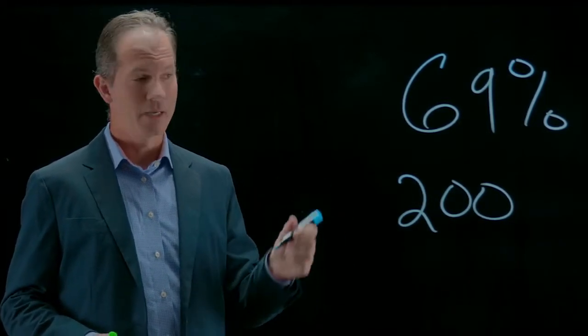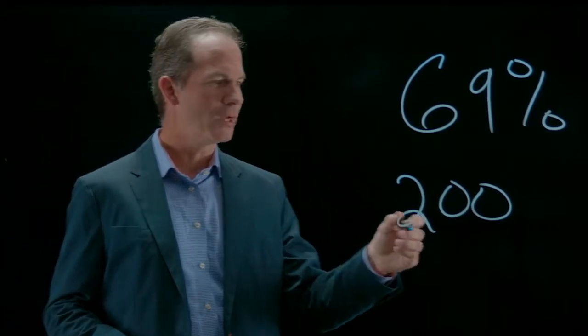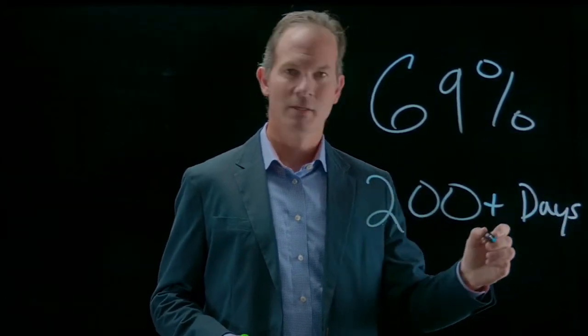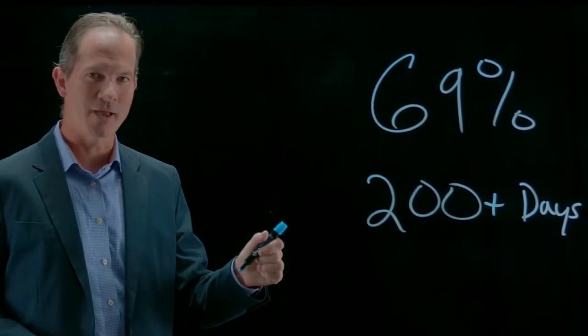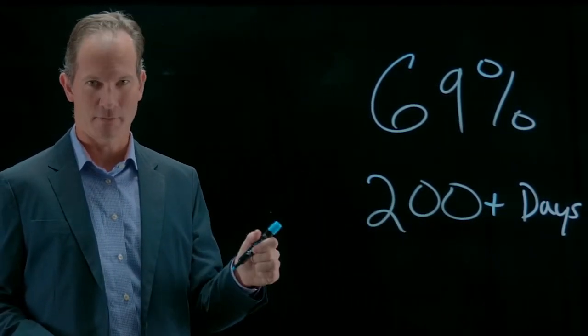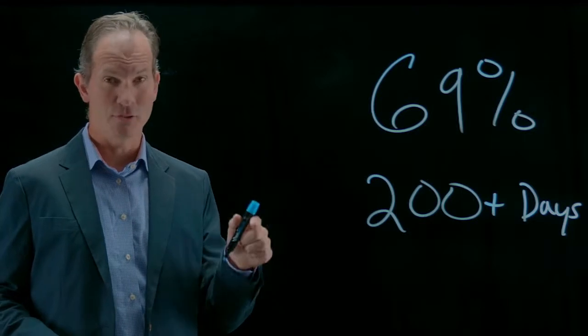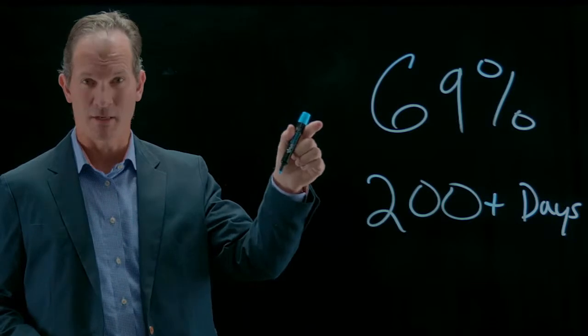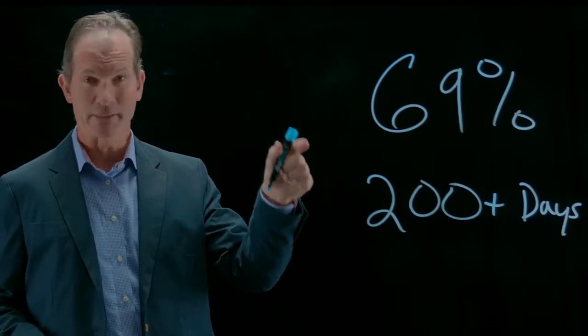That's alarming. The other key point here is 200 plus days. That's the average time for a breach to go unnoticed. So the attacker is in your environment for 200 plus days and you've got to learn from a third party that he's in there and he's taking something. Not good.